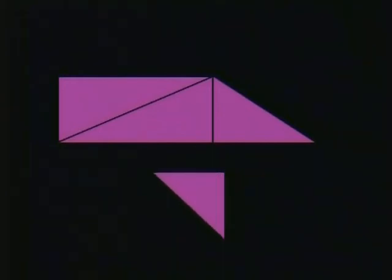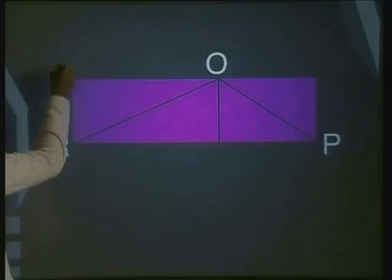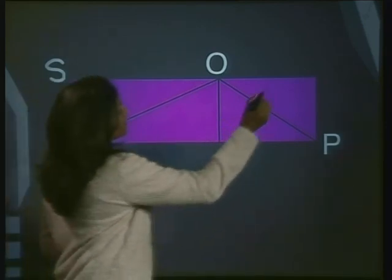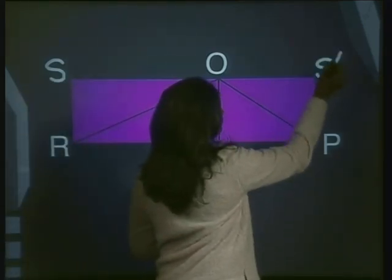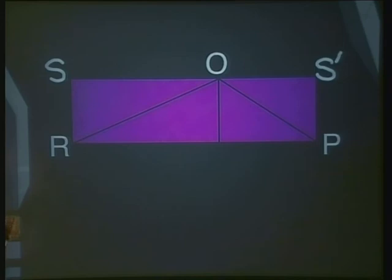...over the line SQ and slide up until QP fits onto OP. Here it is again. And look at what we've made: a rectangle. Let's label it. We'll call our rectangle S S prime P R.